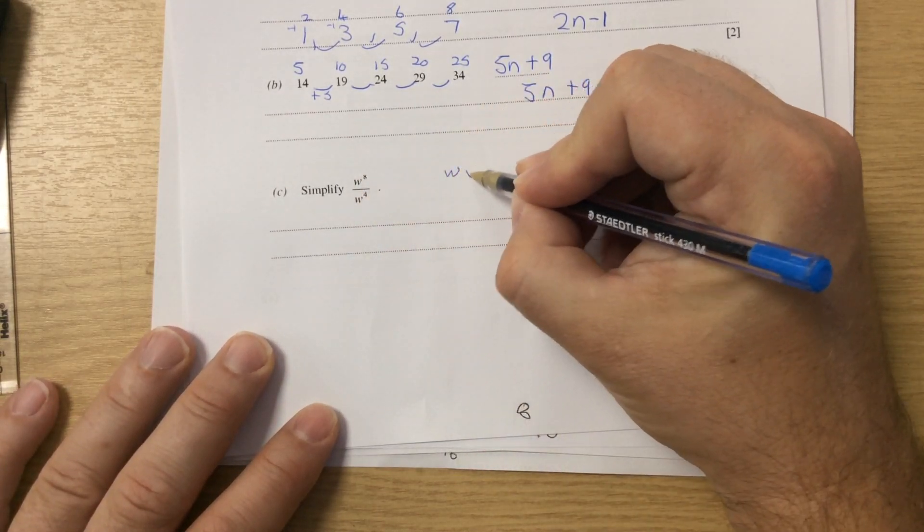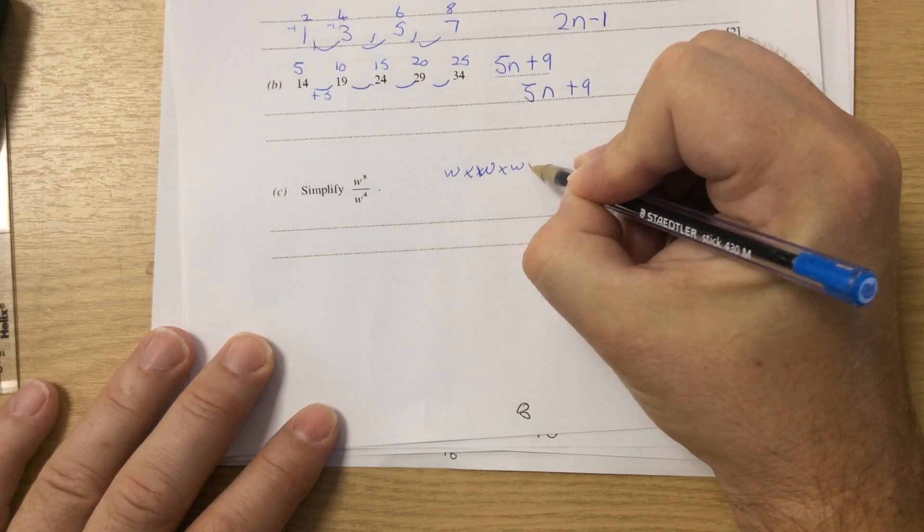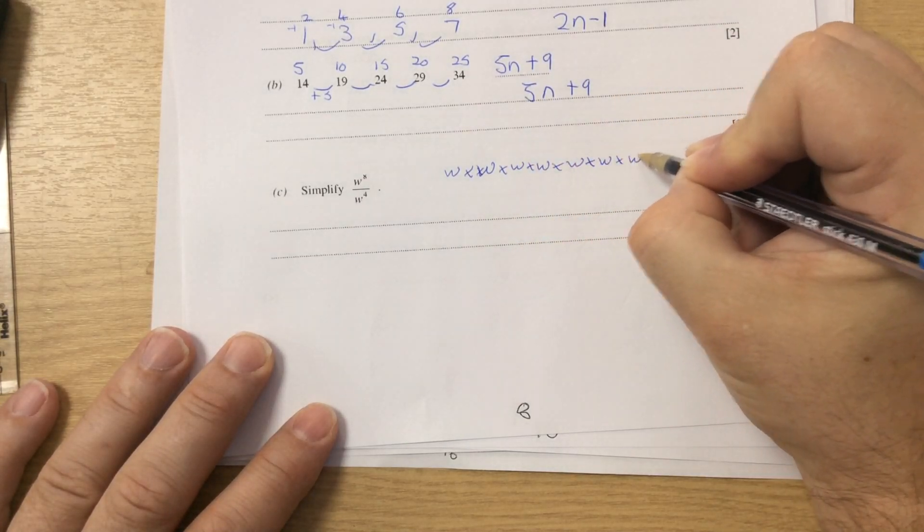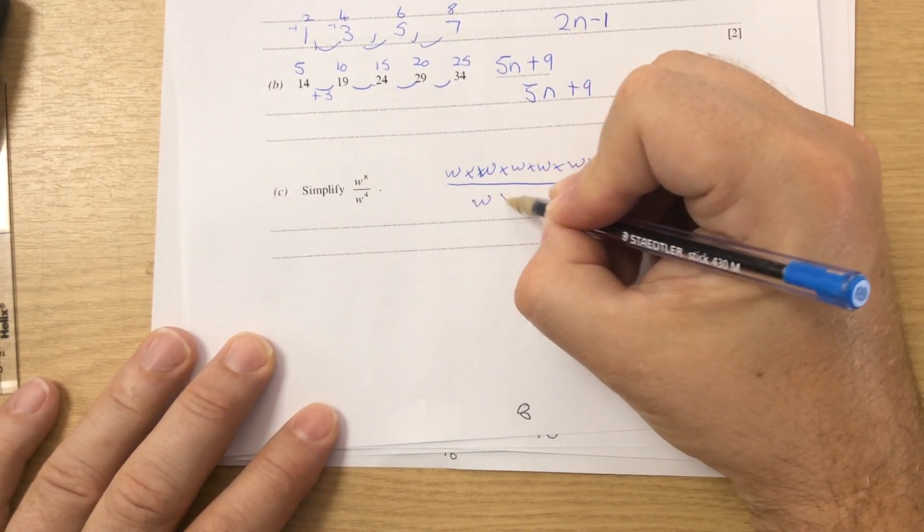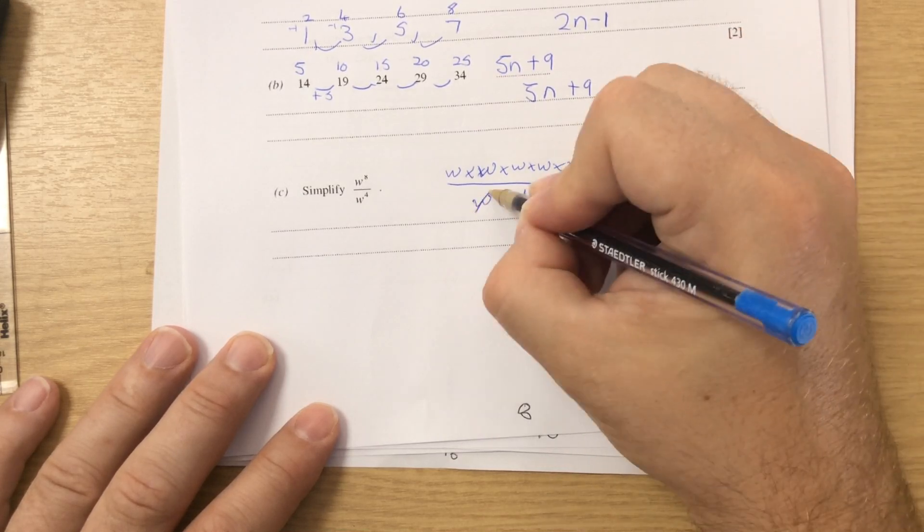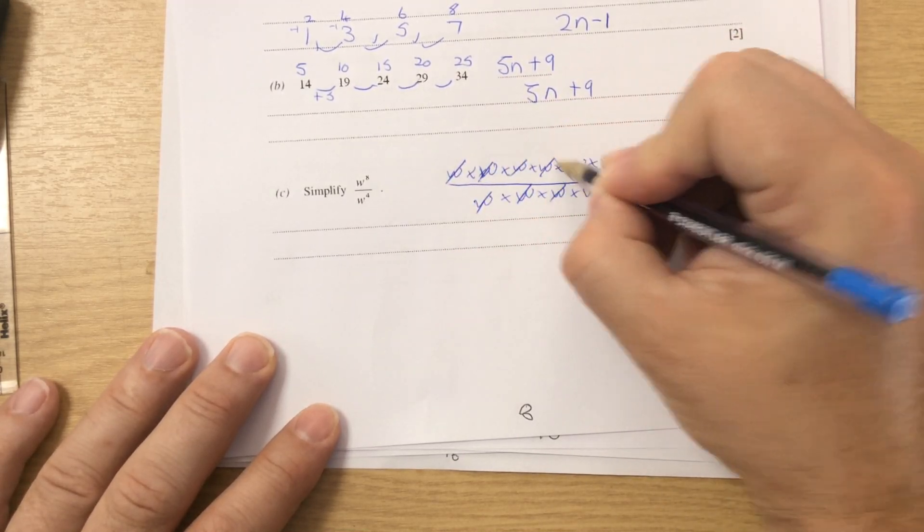Simplifying. When you're dividing in this, you take the powers away. Because on top, W to the 8 means you've got W multiplied by yourself 8 times. And then you're dividing by 4 of them on the bottom. So what I can do is cancel them down and cancel the first ones, the second, the third, the fourth.